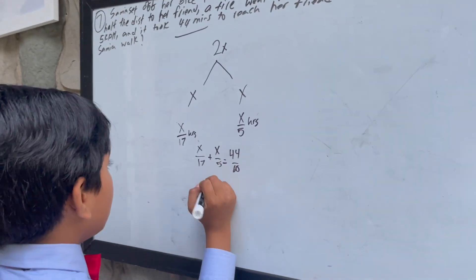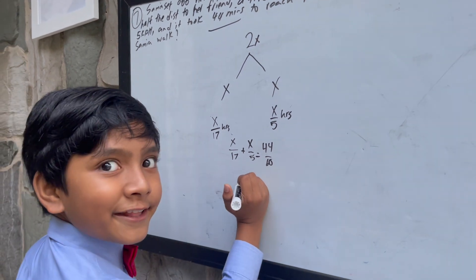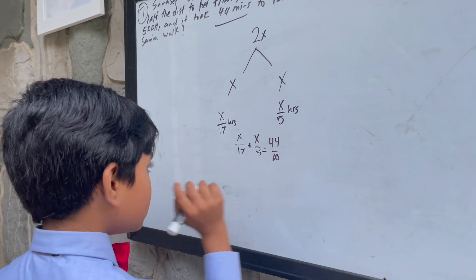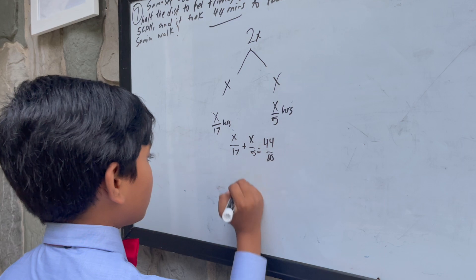So now let's get these over with. We've got X over 17 and X over 5.